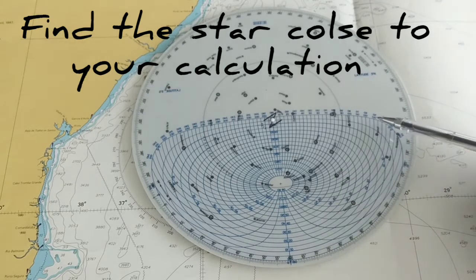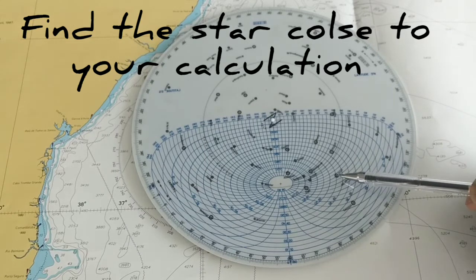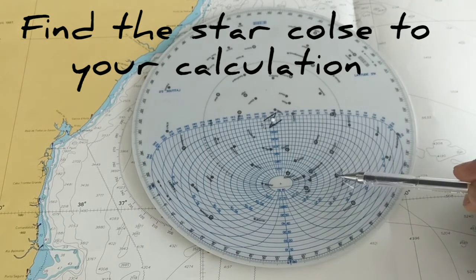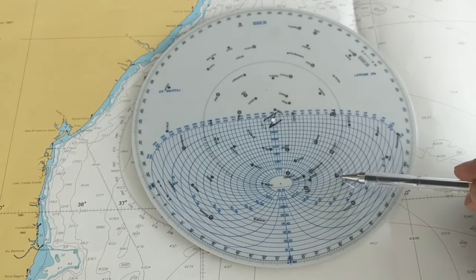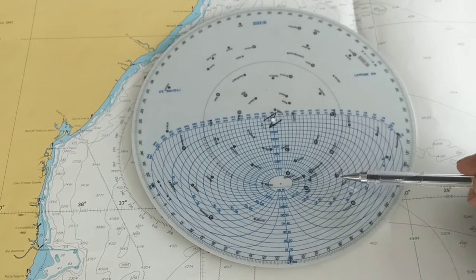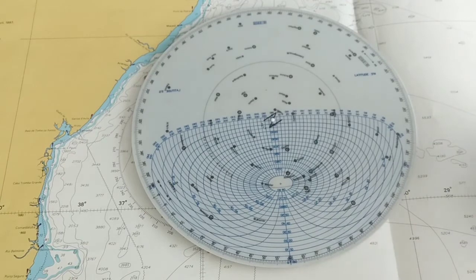And my azimuth is 130. So that means the star is Sirius. So this is how we can find the star using a star finder.